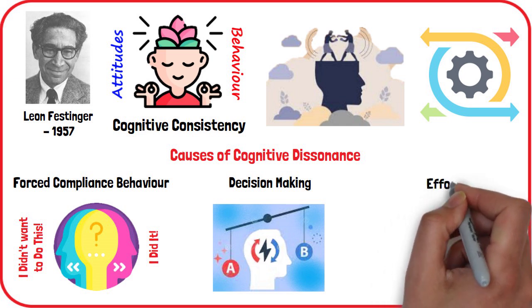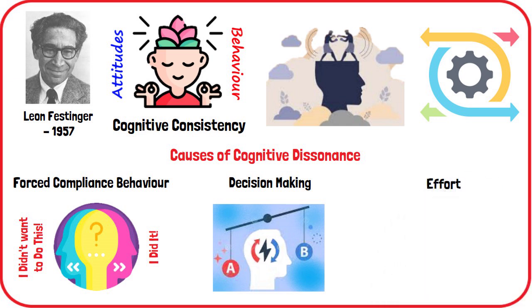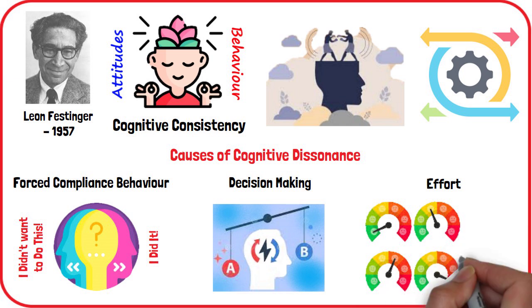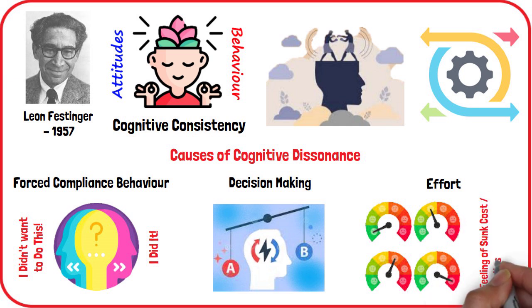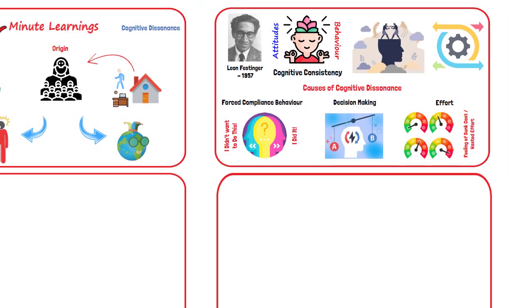Effort. We tend to value most highly those goals or items which we have acquired with considerable effort. This is probably why we would experience dissonance if we evaluated them negatively. If we have spent years of effort achieving something which turns out to be useless, then in order to avoid the dissonance, we will try to convince ourselves that we didn't really spend years of effort, or that the effort was really quite enjoyable, or that it wasn't really a lot of effort.